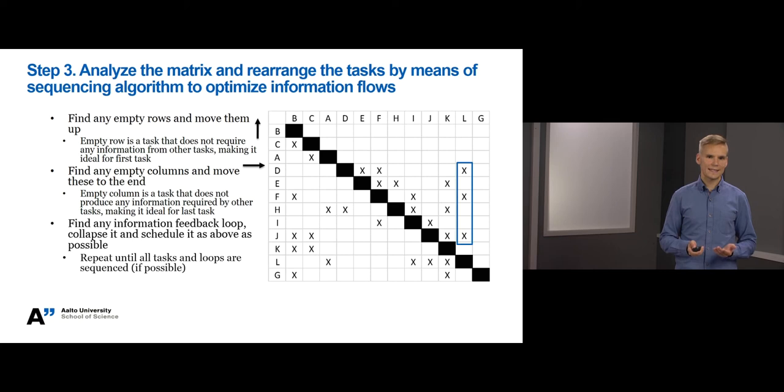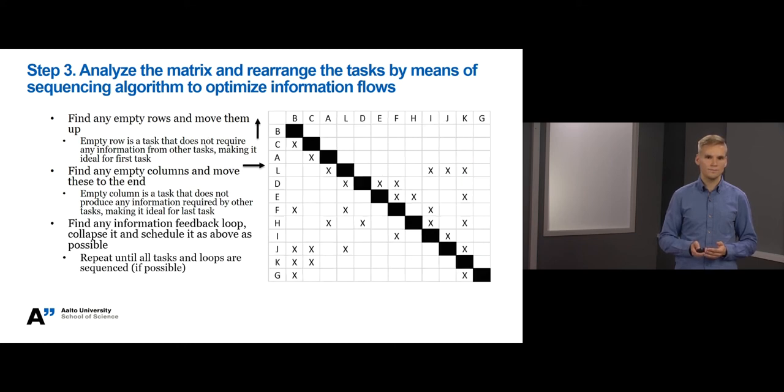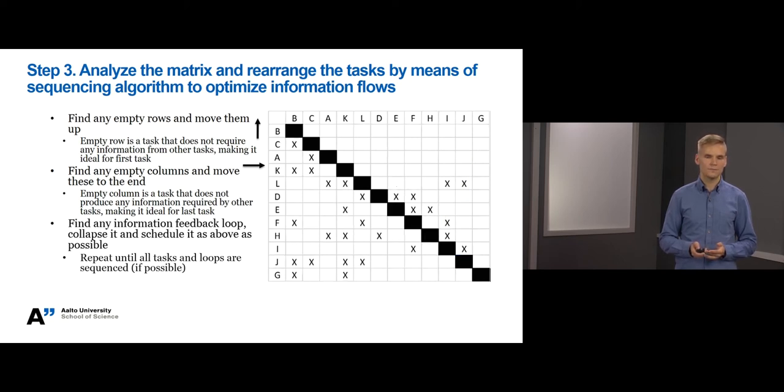Next, we can see that task L produces information to tasks D, F and J. So we should move it before them to move the cross marks closer to the diagonal and below it, and to minimize information feedback loops. Now we can identify that task C provides information to task L, E, H and J. Let's move task C up before these tasks. As you can now see, the cross marks are already closer to the diagonal and many of them are below it.